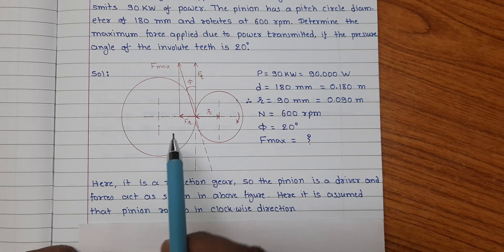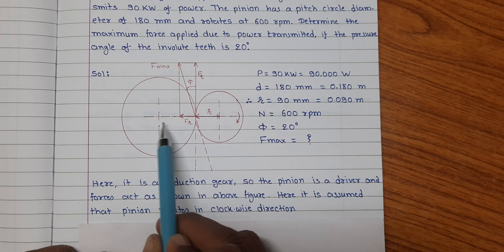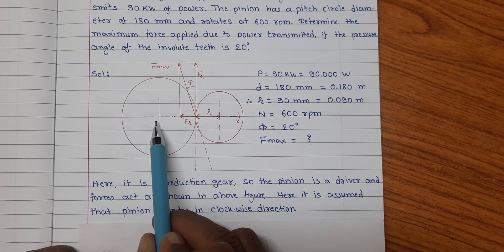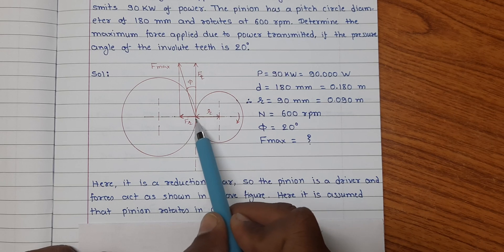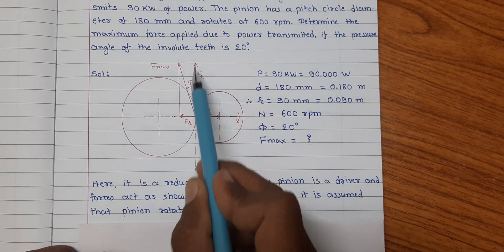Here the force fr is responsible for creating the thrust on bearings, while the component ft is responsible for transmitting the power.